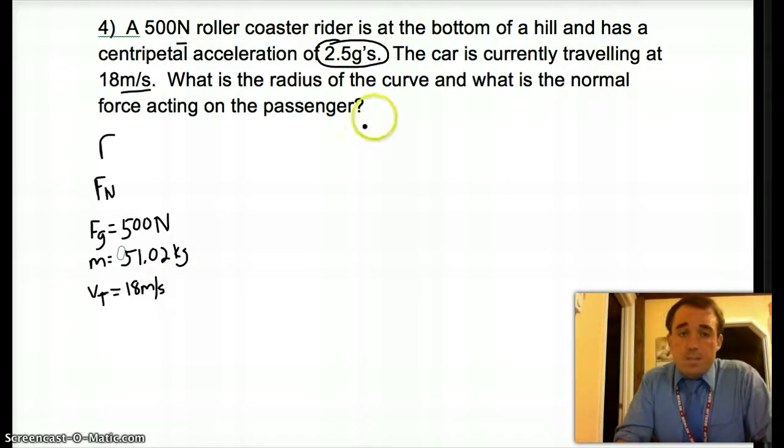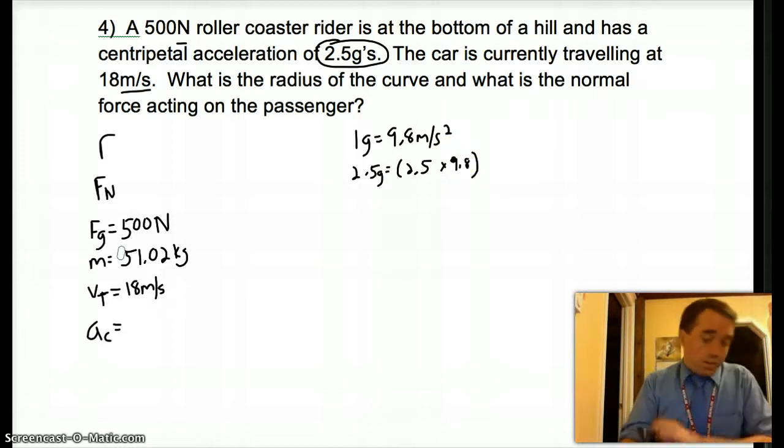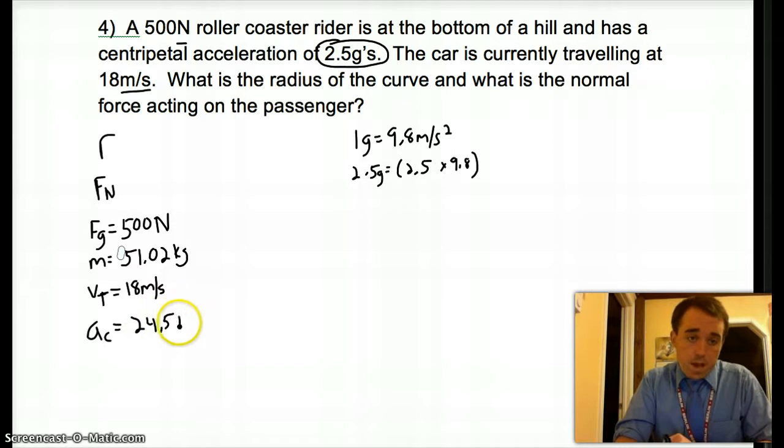And really, that's it. Centripetal acceleration, 2.5 G's. Well, 2.5 G's is 1 G equals 9.8 meters per second squared. So 2.5 G's would just be 2.5 times 9.8, which is our centripetal acceleration is 24.5 meters per second squared.